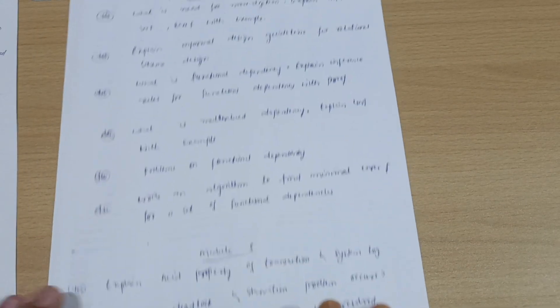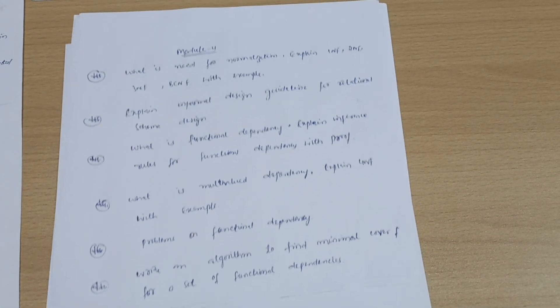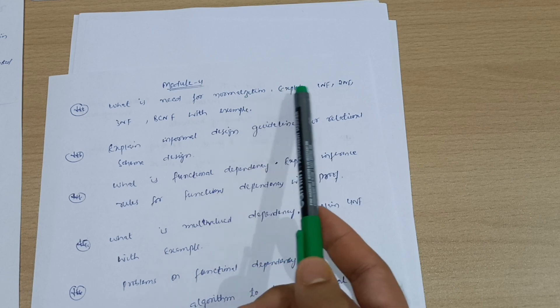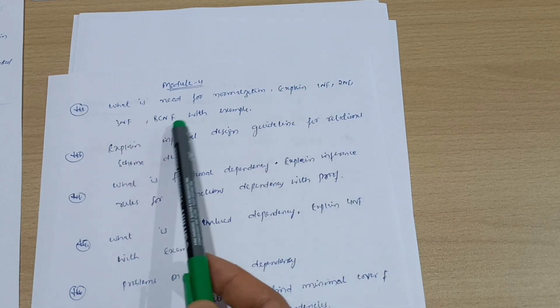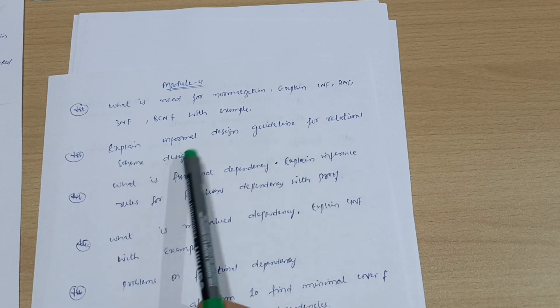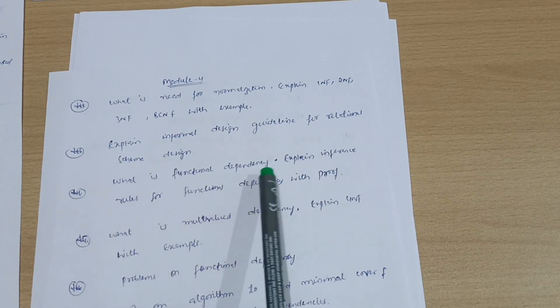Next is Module 4, where we have six questions. What is the need for normalization? Explain 1NF, 2NF, 3NF, and BCNF with examples. Explain informal design guidelines for relational schema design. What is functional dependency?